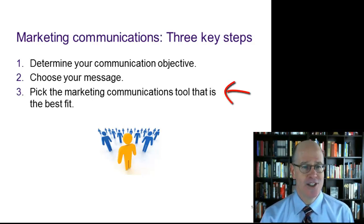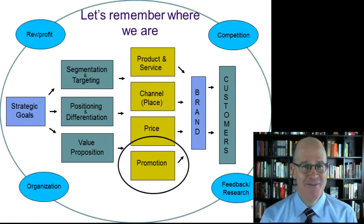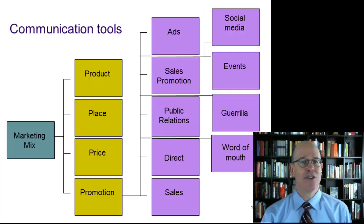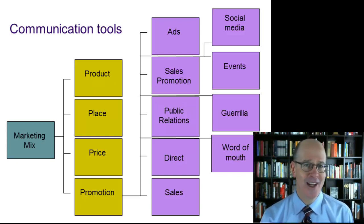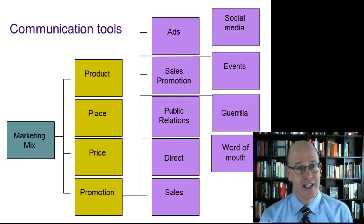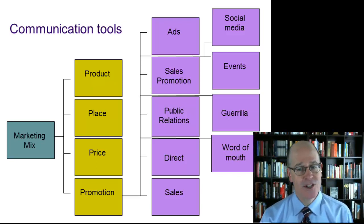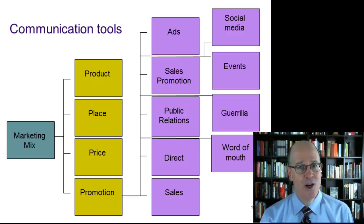Our third point is to pick the marketing communications tool that is the best fit. Within the promotion box are all of the things in the marketer's marketing communications toolkit. This is where we find advertising, public relations and earned media, direct marketing such as email, letters, or catalogs. Certainly the sales force would be here — in many industries it is a wonderful marketing communications tool. Social media, events, guerrilla, and word of mouth are all channels or tools that marketers can use to communicate with their target audience.